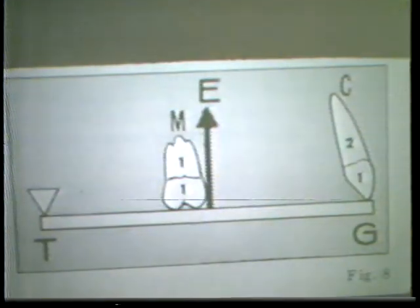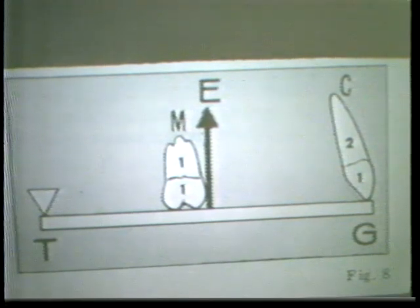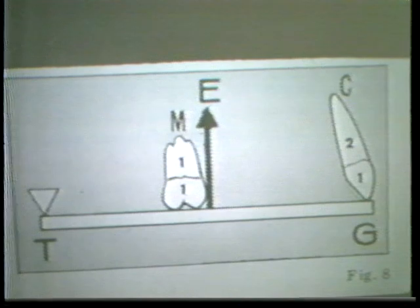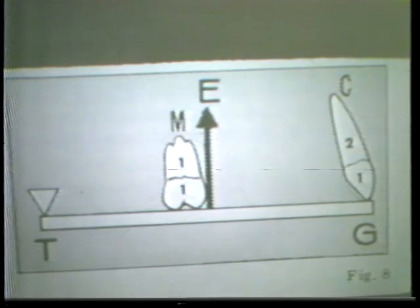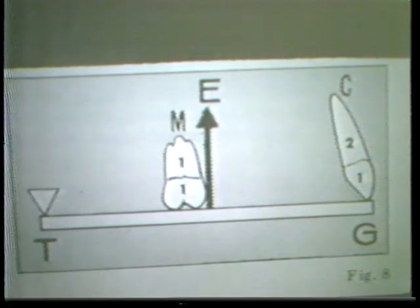We have already studied posterior teeth. We have seen that their size, shape, number of cusps, and number of roots are specifically designed for the grinding of teeth at their position along the fulcrum of the lower jaw. The remaining component of the dentition, which we will now consider, is the anterior teeth.